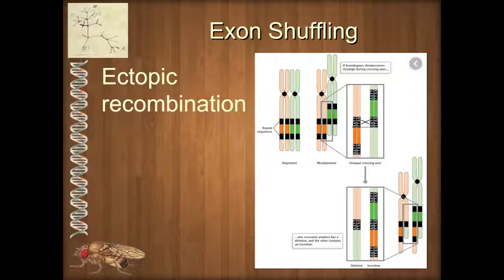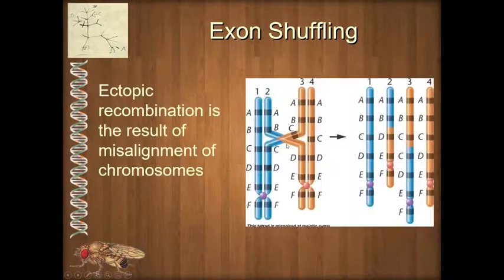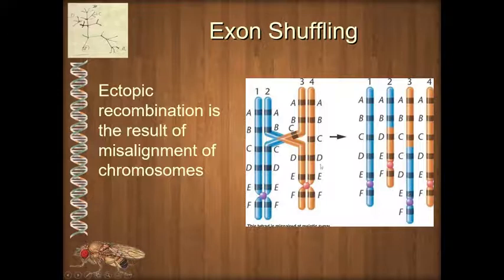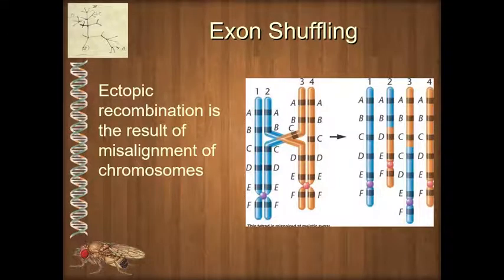We can think about this strange arrangement of eukaryotic genes as a form of modularism that has been selected for because it allows for more possible beneficial combinations. This diagram shows the same thing, looking at it between entire genes on a chromosome, but if it occurs in the middle of a gene and is more limited in scope, then we end up with exon shuffling.